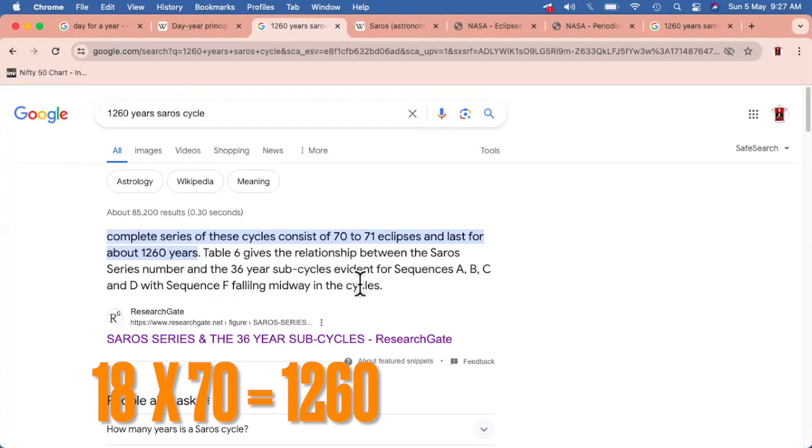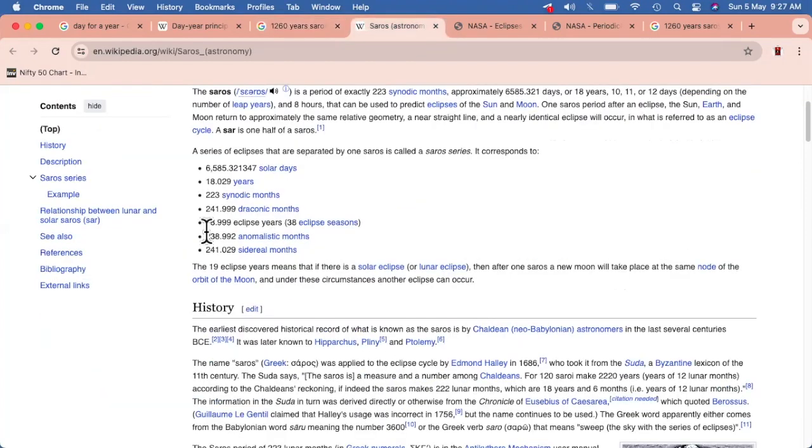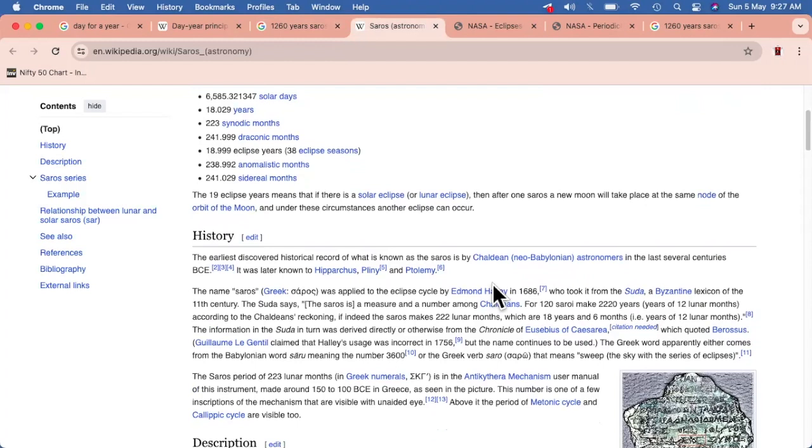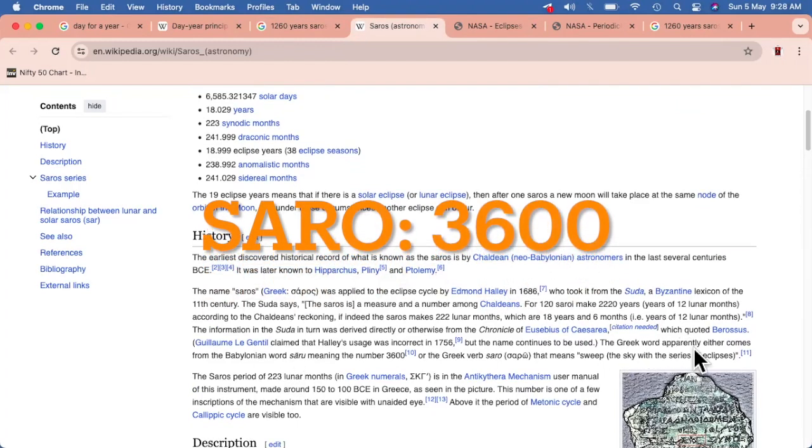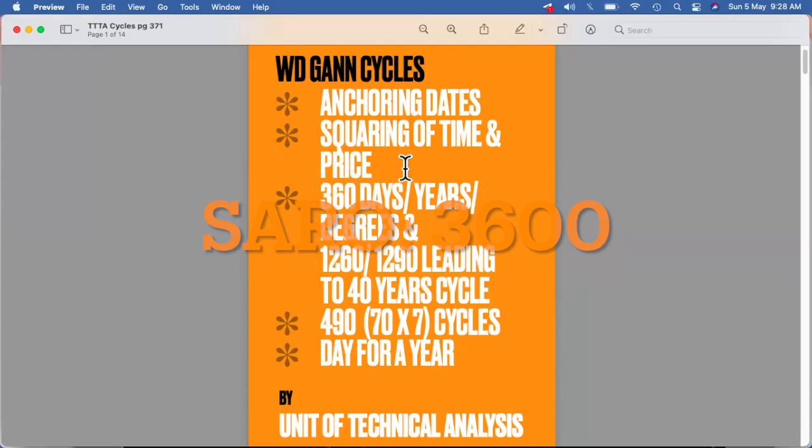So this is of 18 years. Not only that, but again I would like to emphasize one more important thing which we'd like to see over here is the Greek word apparently either comes from the Babylonian word saru, meaning the number 3600.